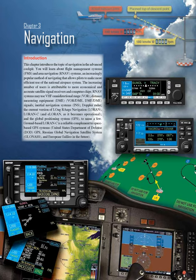The increasing number of users is attributable to more economical and accurate satellite signal receivers and computer chips. RNAV systems may use VHF omnidirectional range (VOR), distance measuring equipment (DME), VOR/DME, DME/DME signals, inertial navigation systems (INS), Doppler radar, LORAN-C, ALORAN as it becomes operational, and the global positioning system (GPS), to name a few.